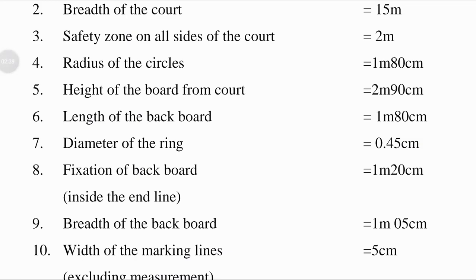Radius of the circles: the radius of a circle is half of the diameter, that is equal to 1 meter and 80 centimeters. Height of the board from court: height means from base to top; board means a long thin flat piece of hard material. The height of the board from the court is equal to 2 meters and 90 centimeters.